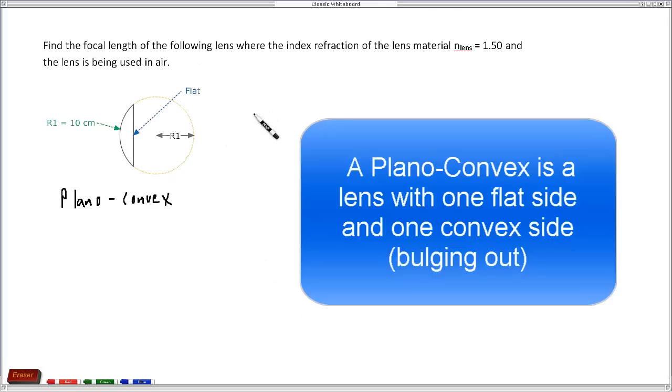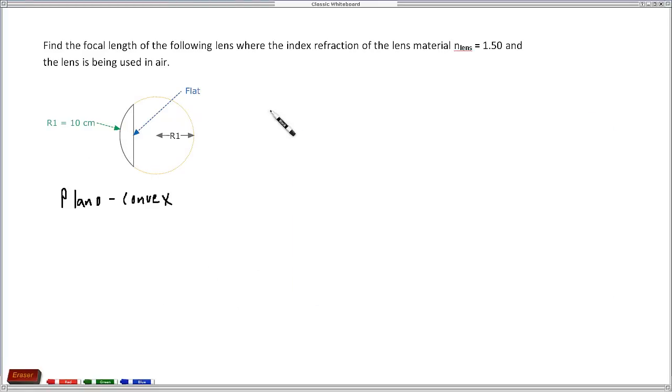Now the lens maker formula tells us that 1 over the focal length is equal to the index of refraction of the lens over the index of refraction for air minus 1, times 1 over R1 minus 1 over R2.